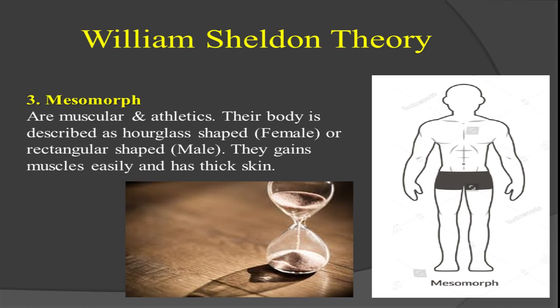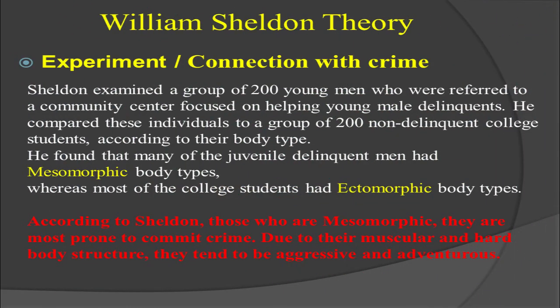An hourglass is a device used to measure time — specifically one hour. Mesomorphic people are considered very strong, muscular, and energetic. They gain muscles easily and have thick skin.